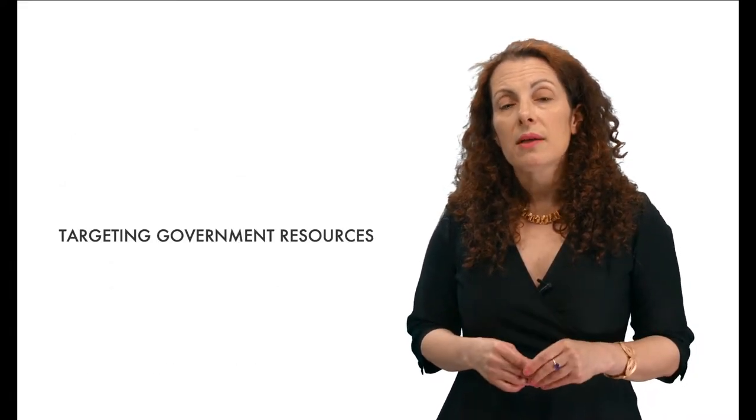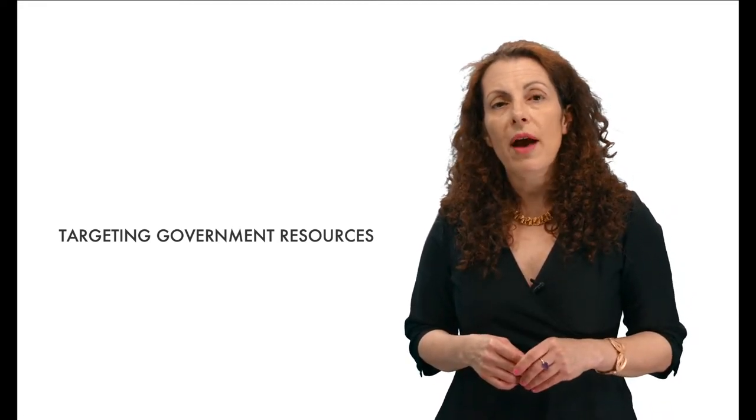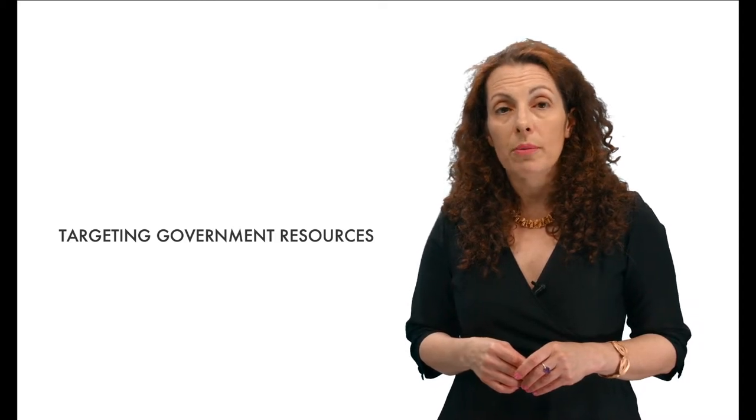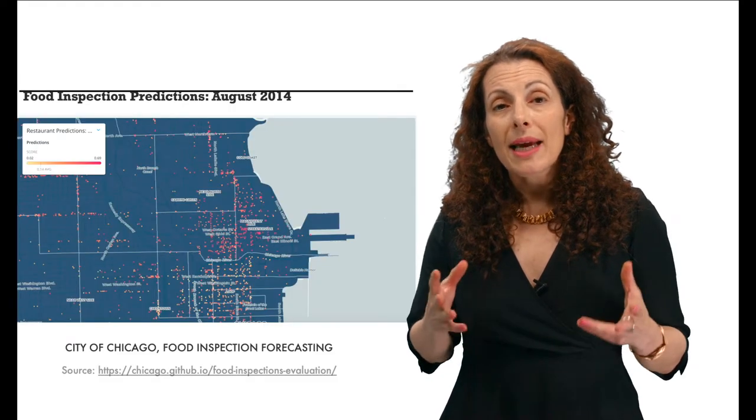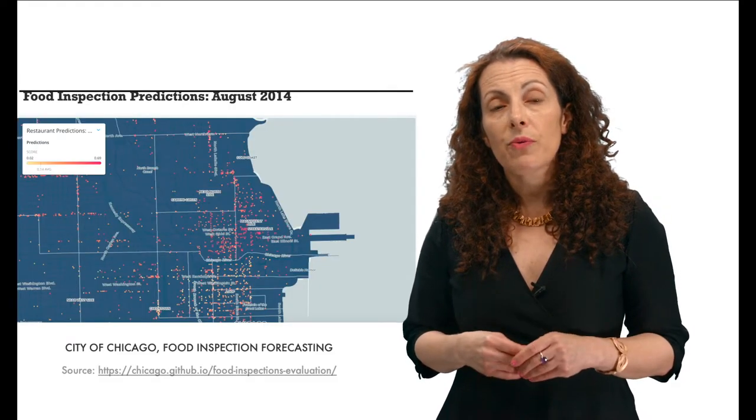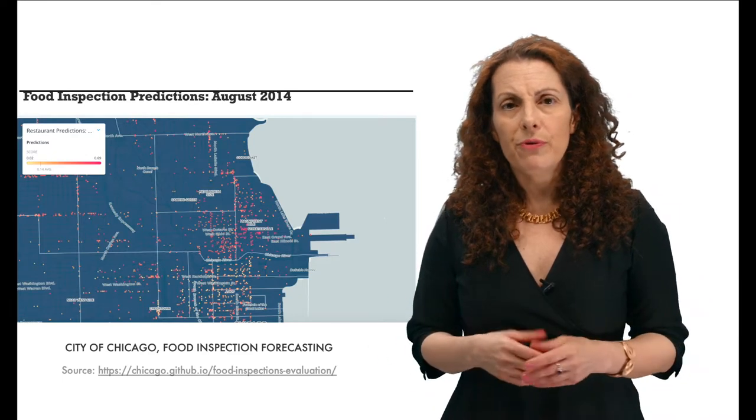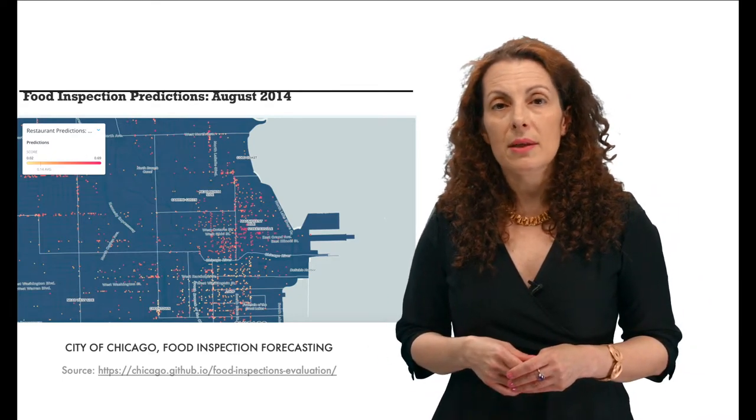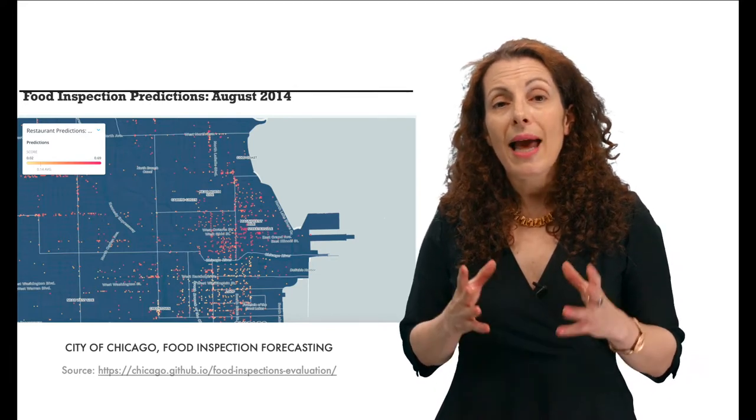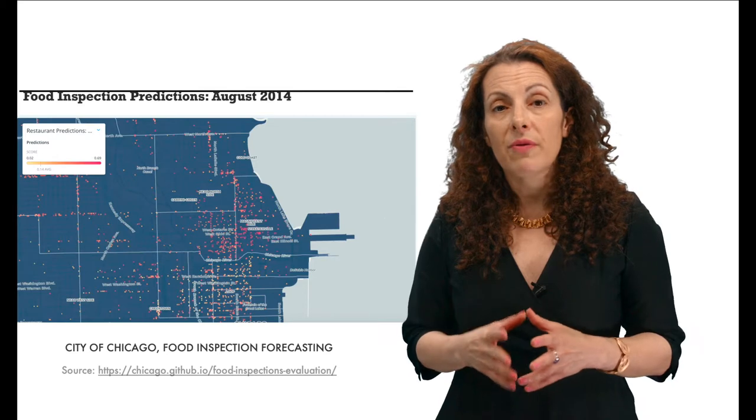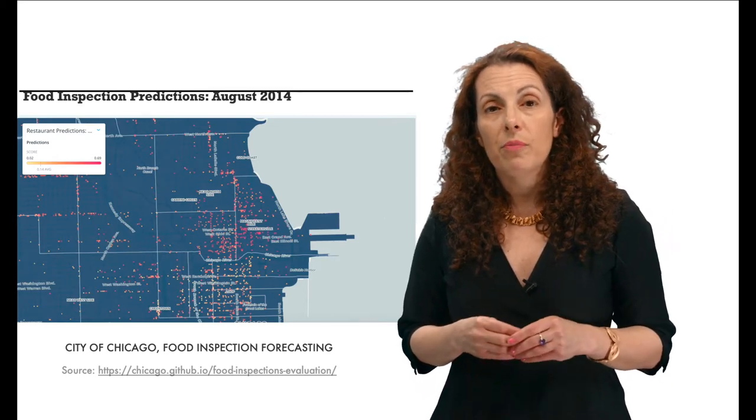Ultimately, the goal of using data is to craft better policies, design more effective services, and solve problems by virtue of having a more precise definition of the problem. With data, we can save money as well. For example, data can help to target scarce enforcement resources more effectively. Chicago has more than 15,000 food establishments, but only three dozen inspectors. Chicago's city government used its data on restaurant inspections to create an algorithm to predict food safety violations. This project increased the effectiveness of its inspections by 25%.